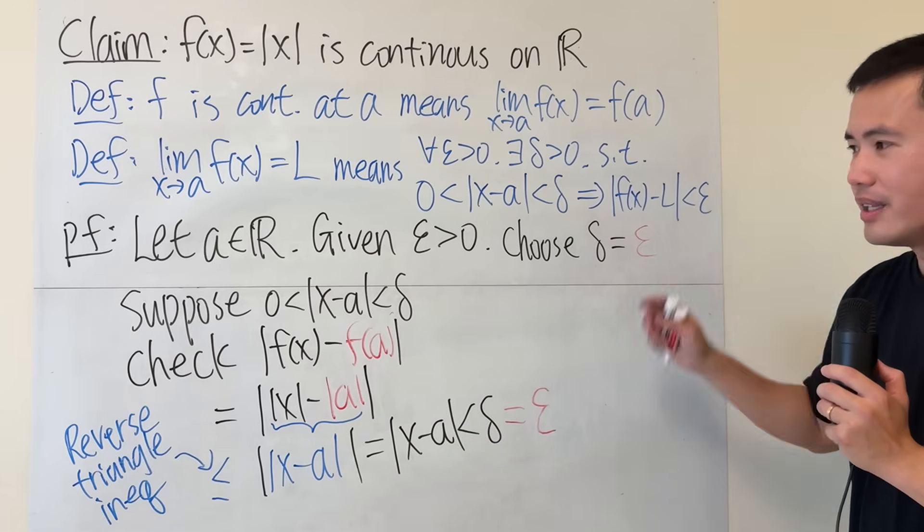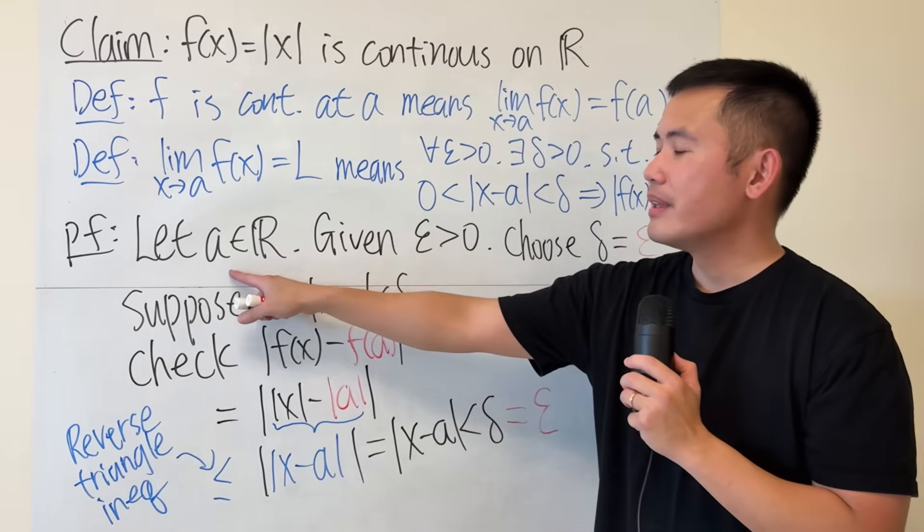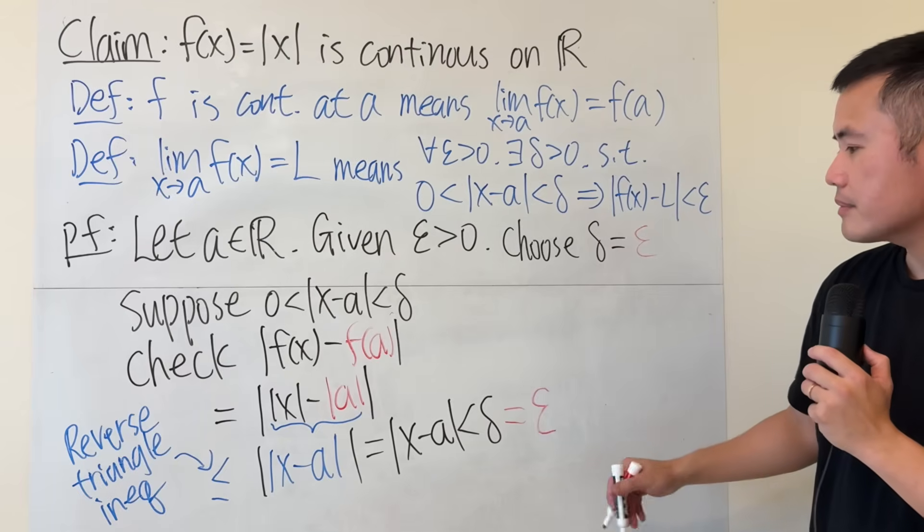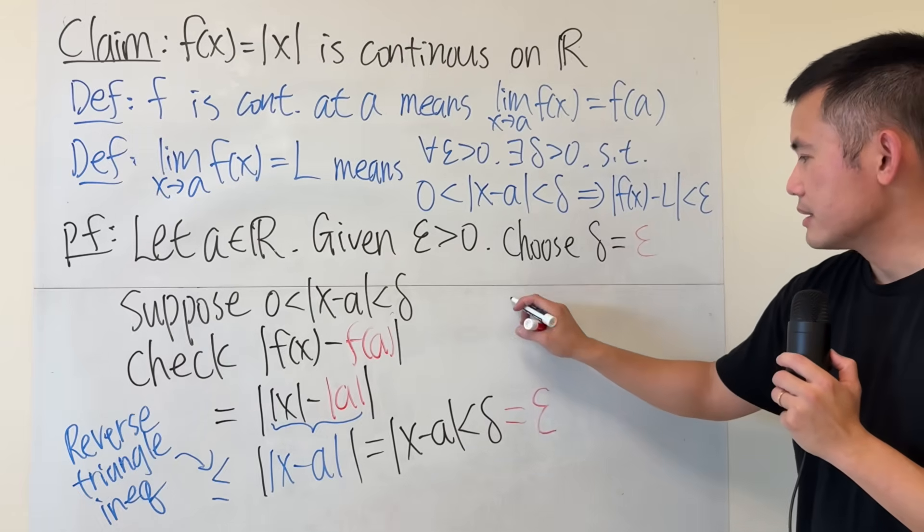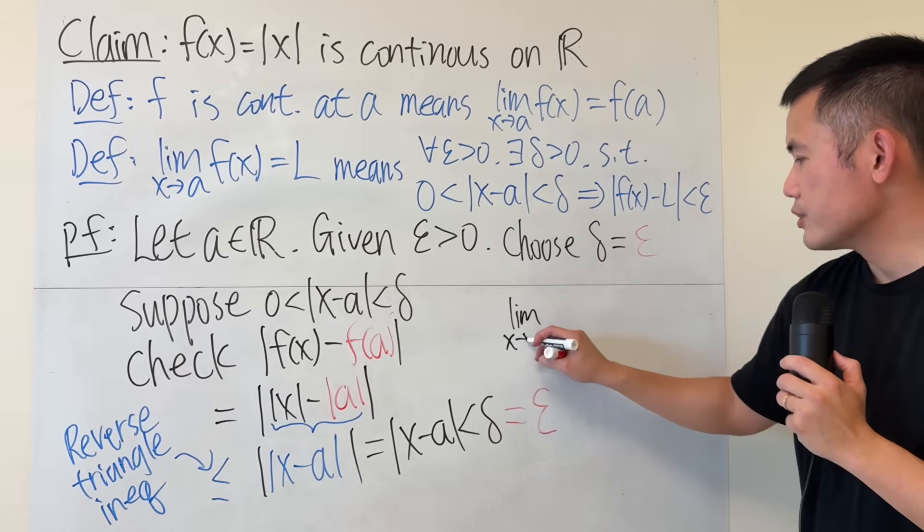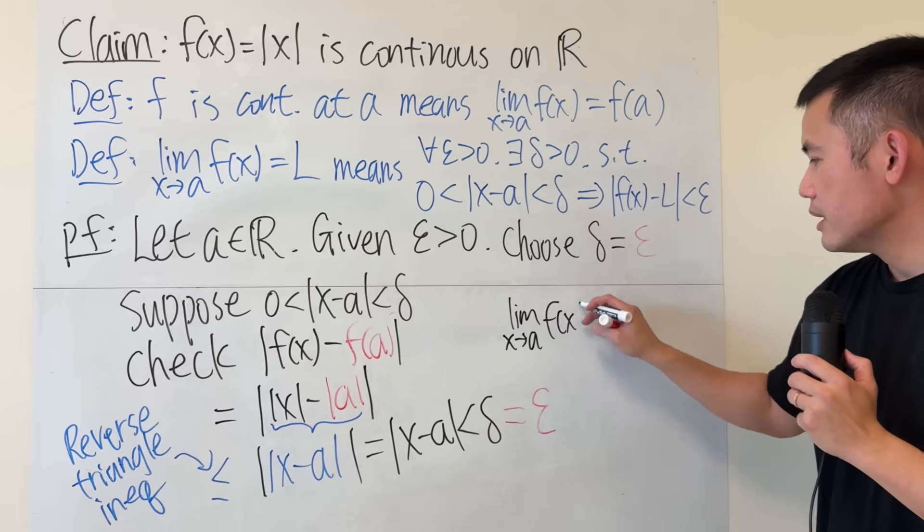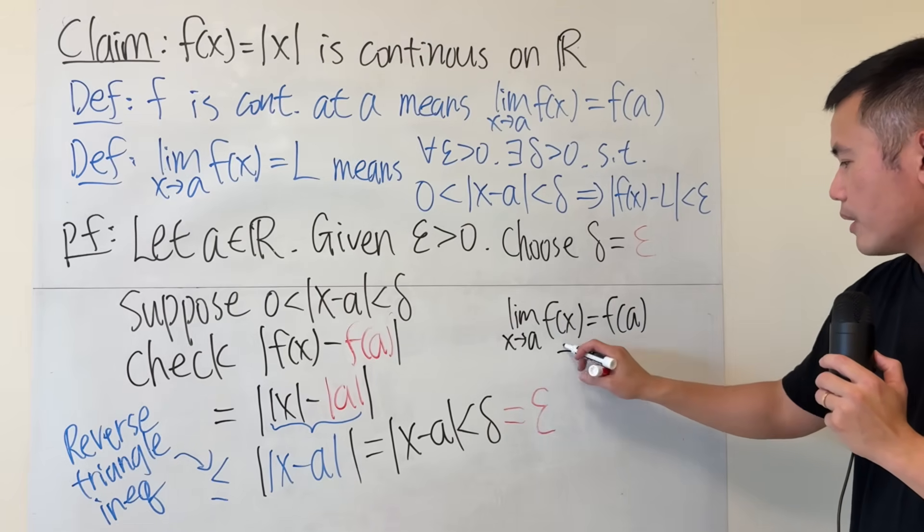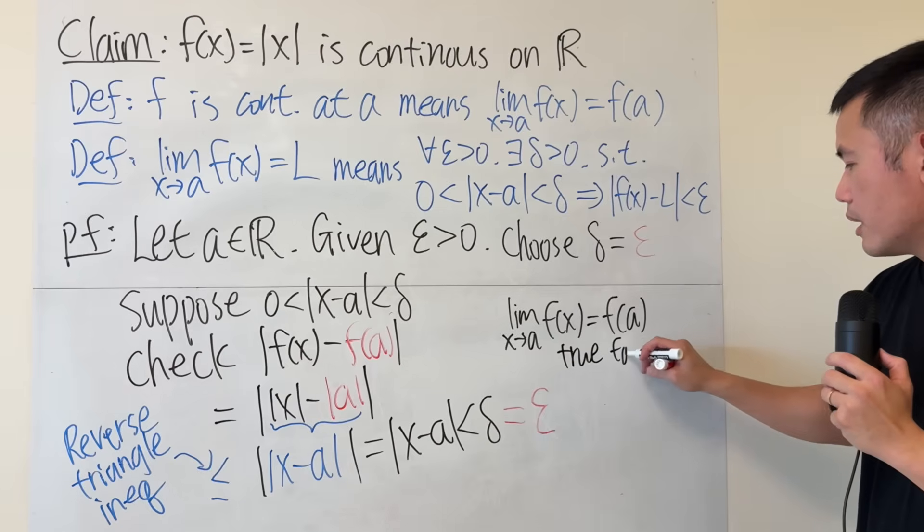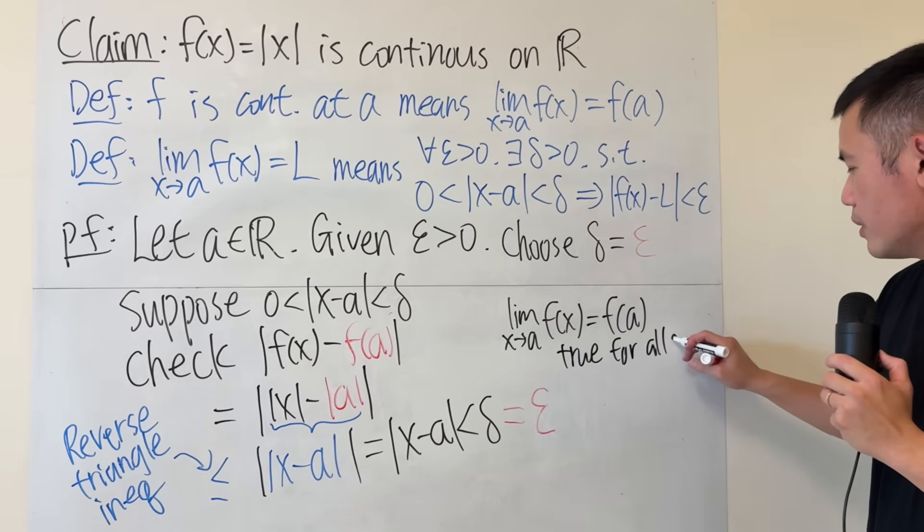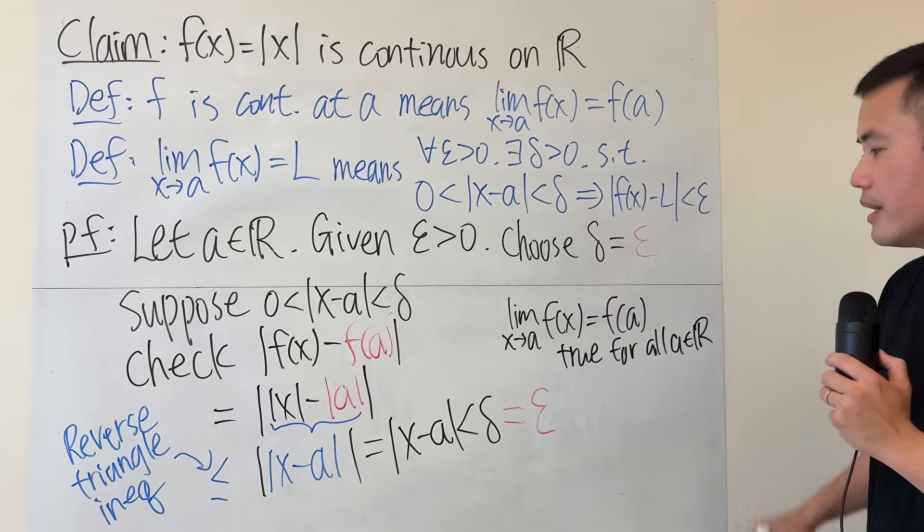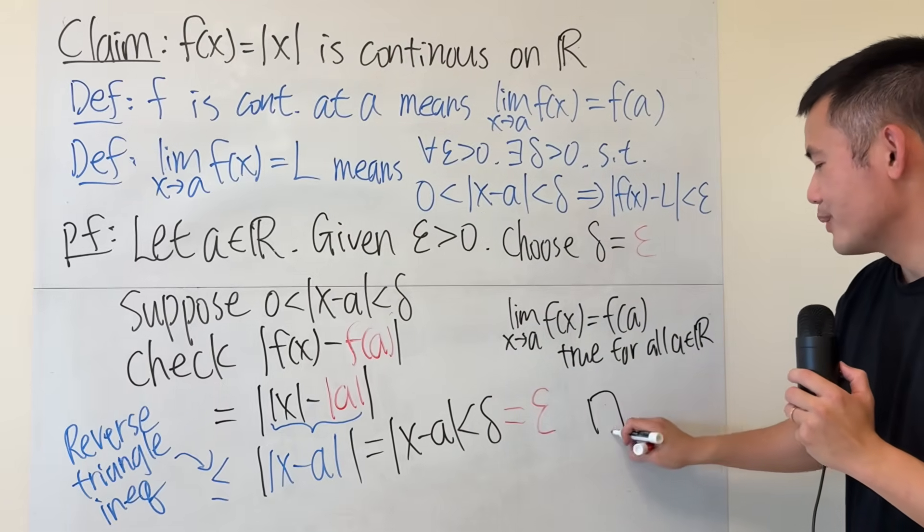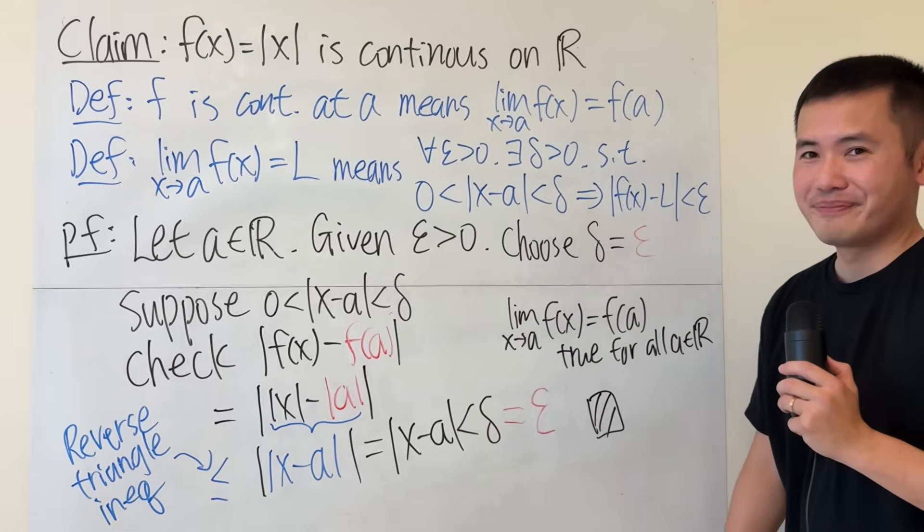And then, since a is just any real number, and we have shown that this right here is the limit as x approaching a of the function, it's equal to f(a). And this is true for all a, which says f is continuous. And we're done. We can put QED at the end. Boom.